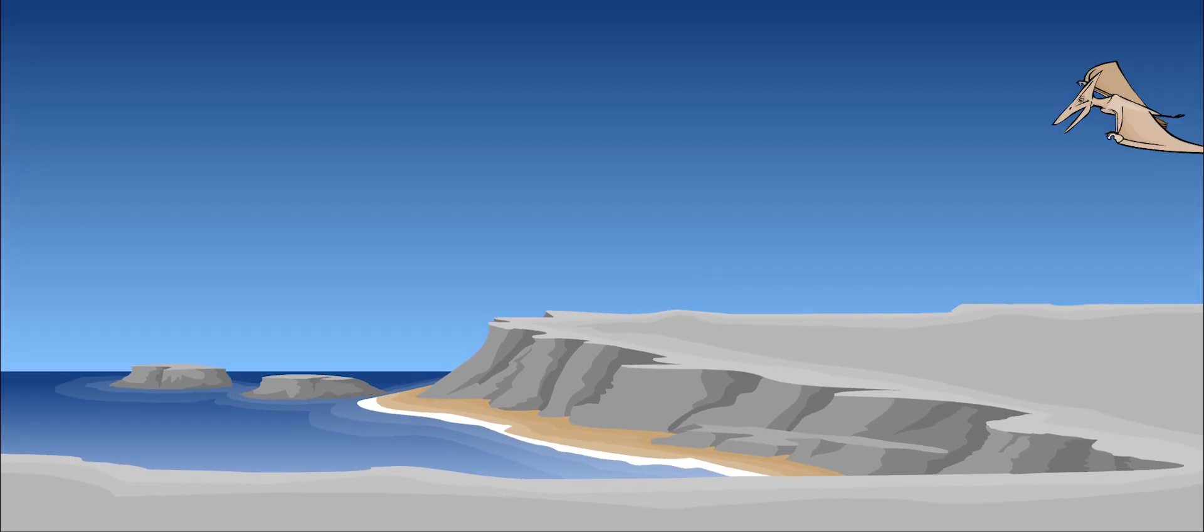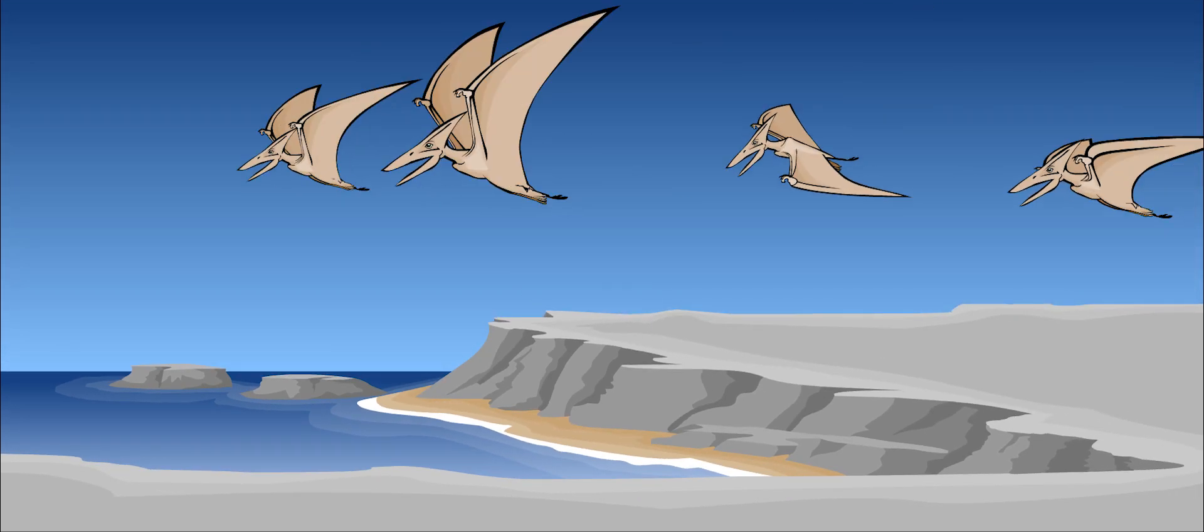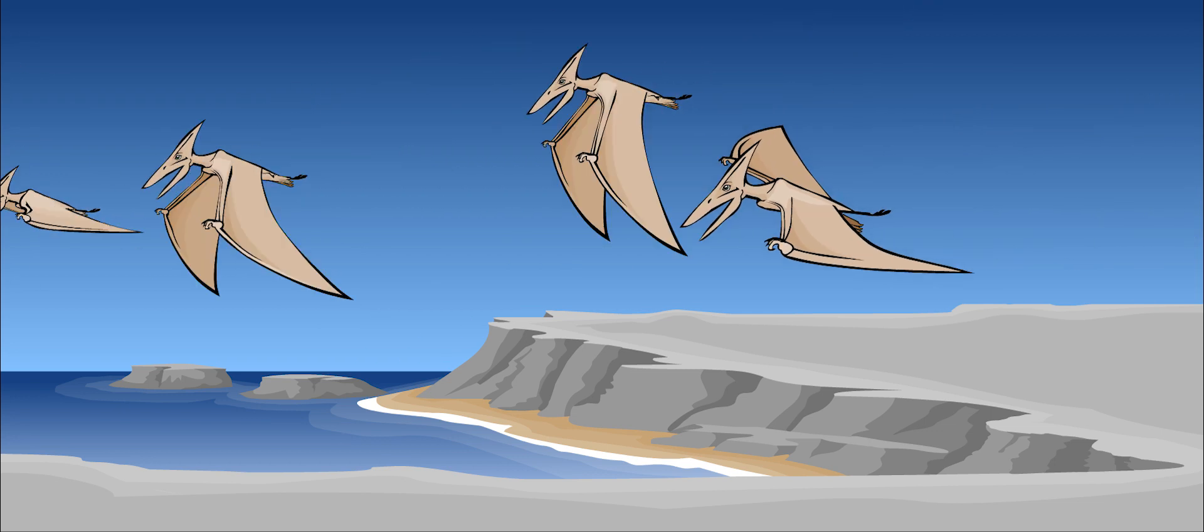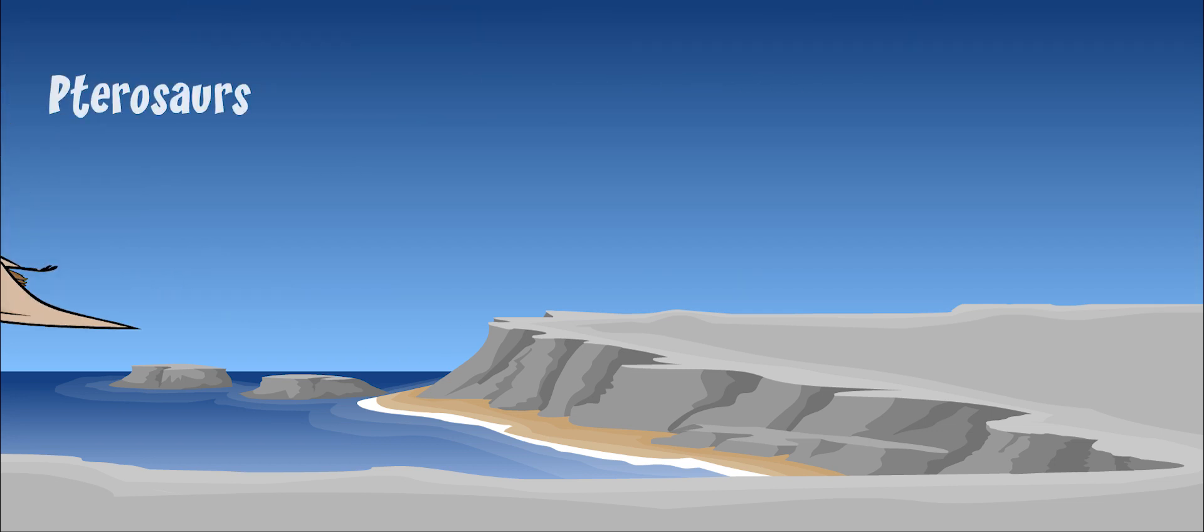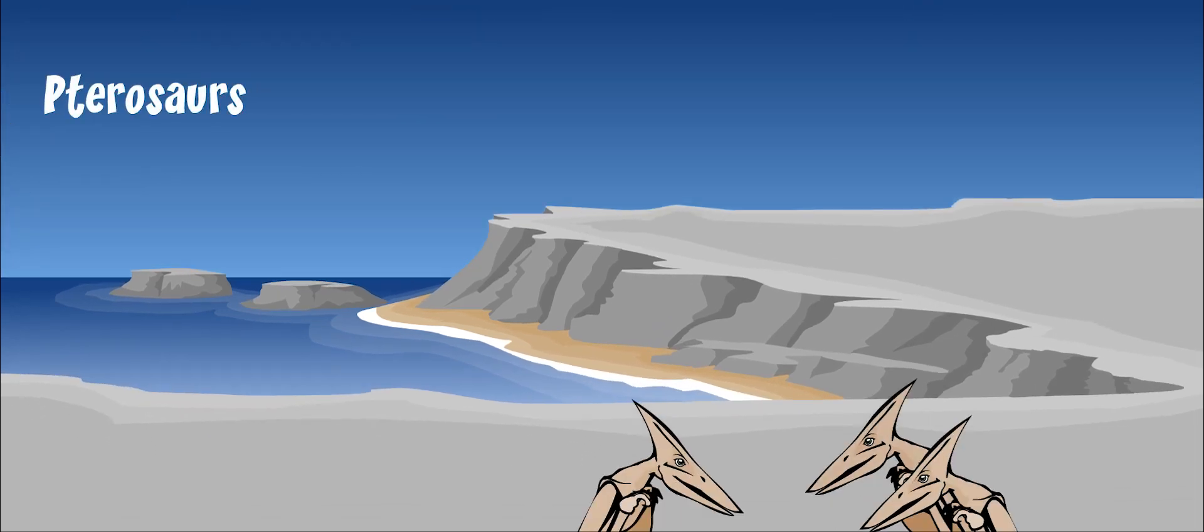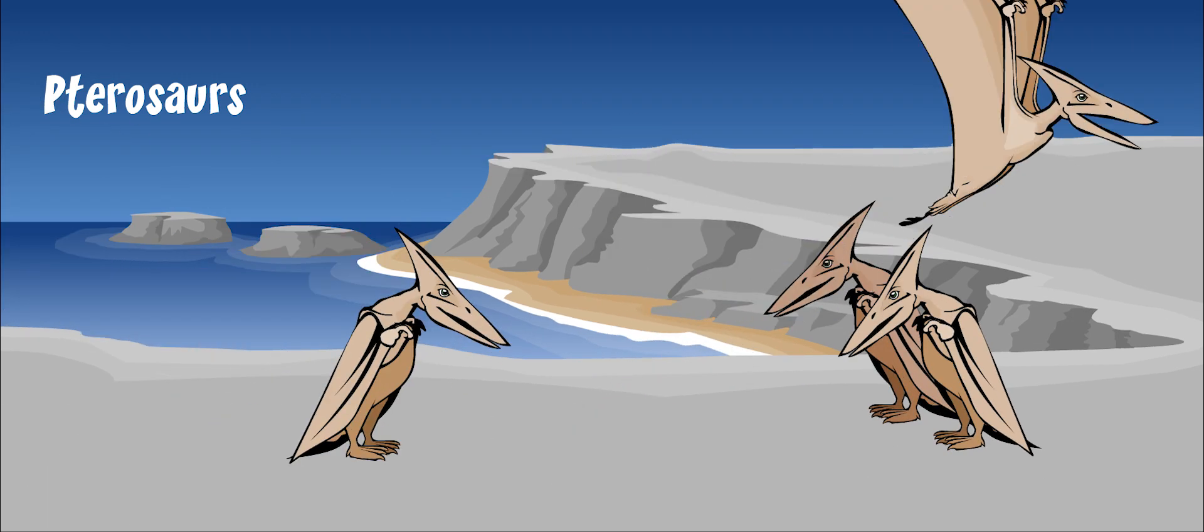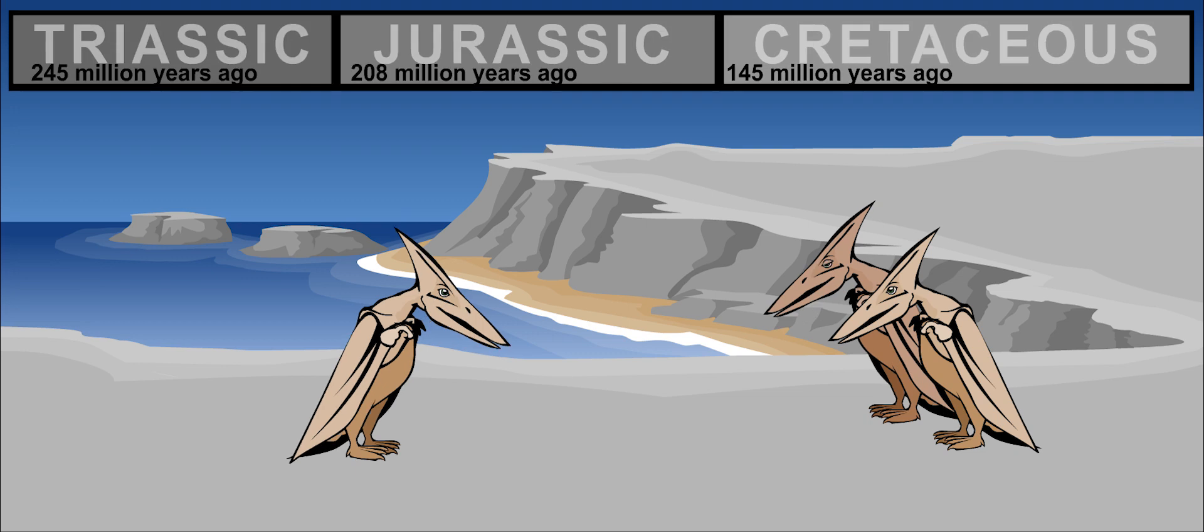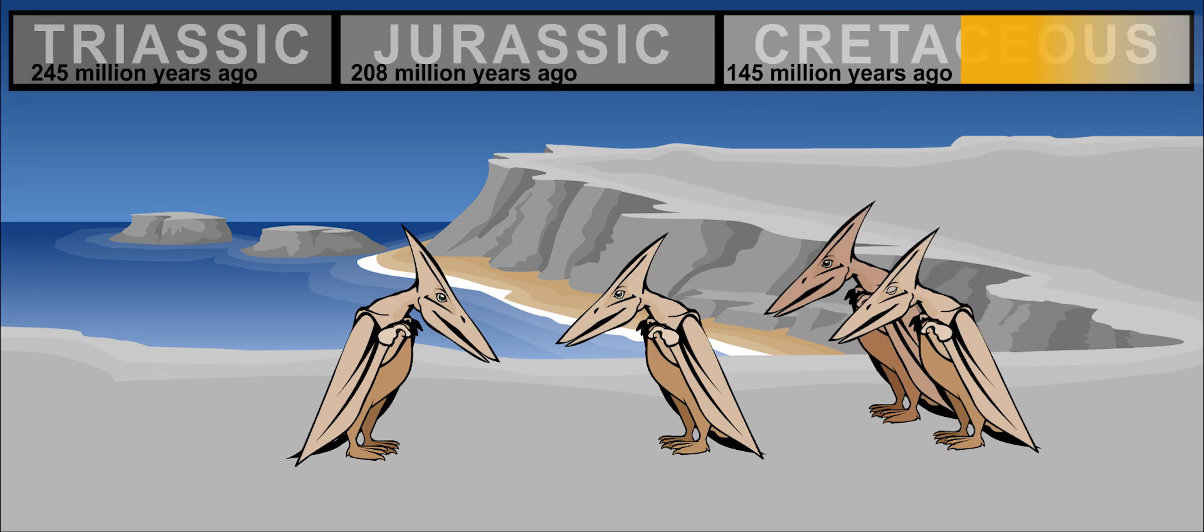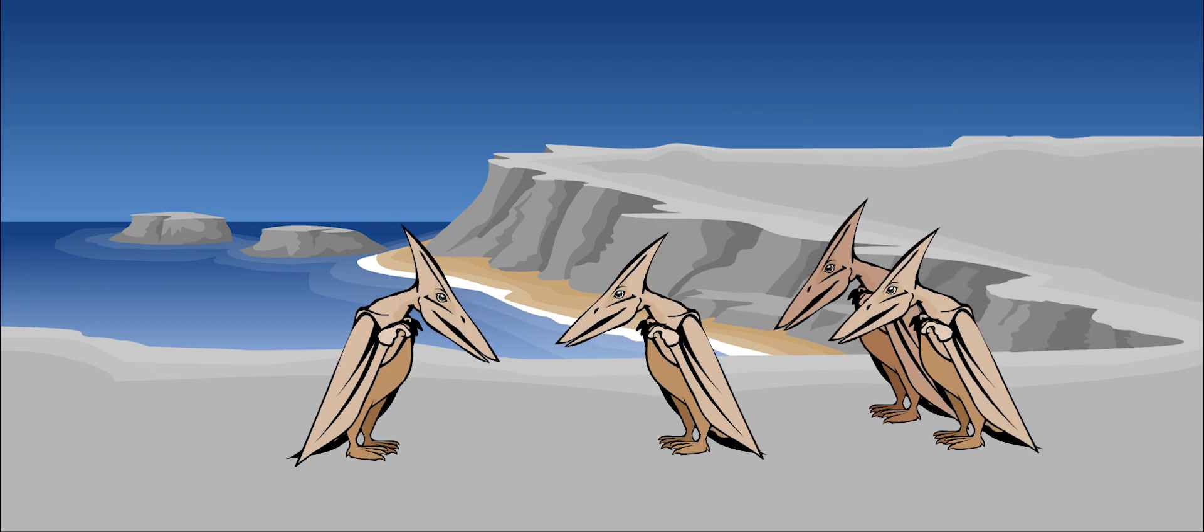Pteranodons and pterodactyls were not actually dinosaurs. They belonged to a group of flying reptiles called pterosaurs. But pterosaurs have a lot in common with dinosaurs. They lived during the same time, about 85 to 75 million years ago, and were also reptiles.